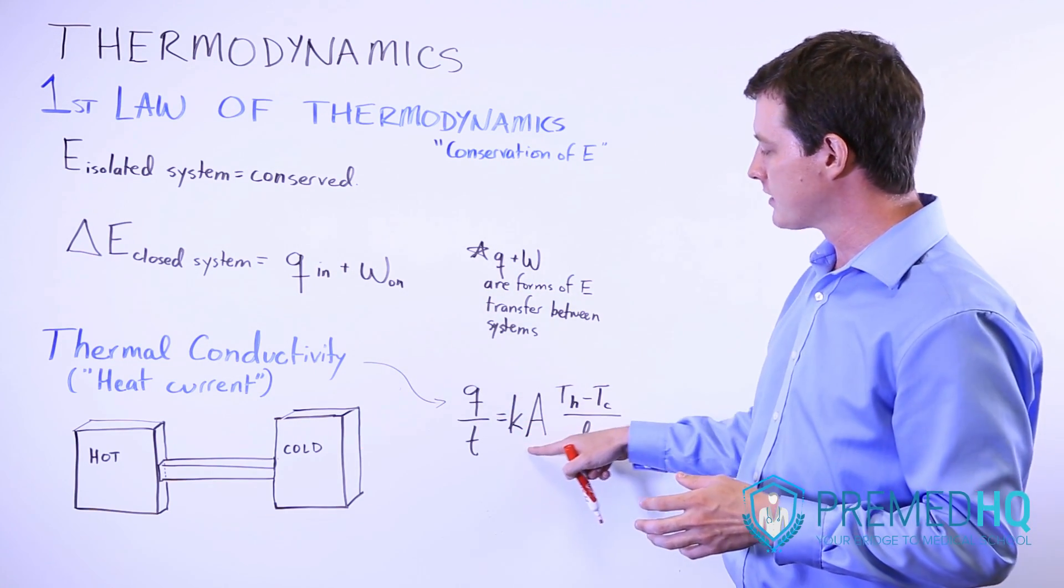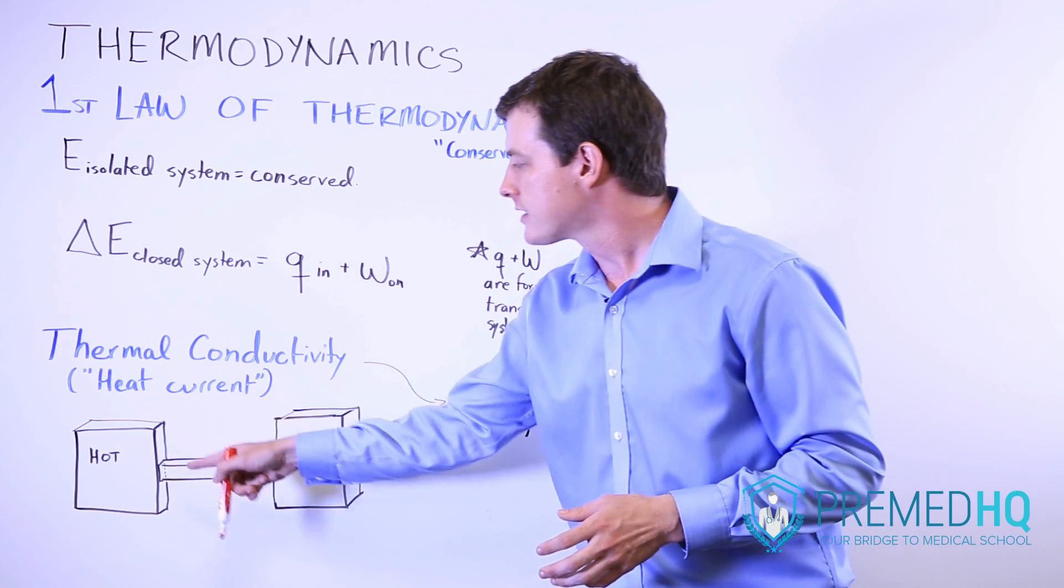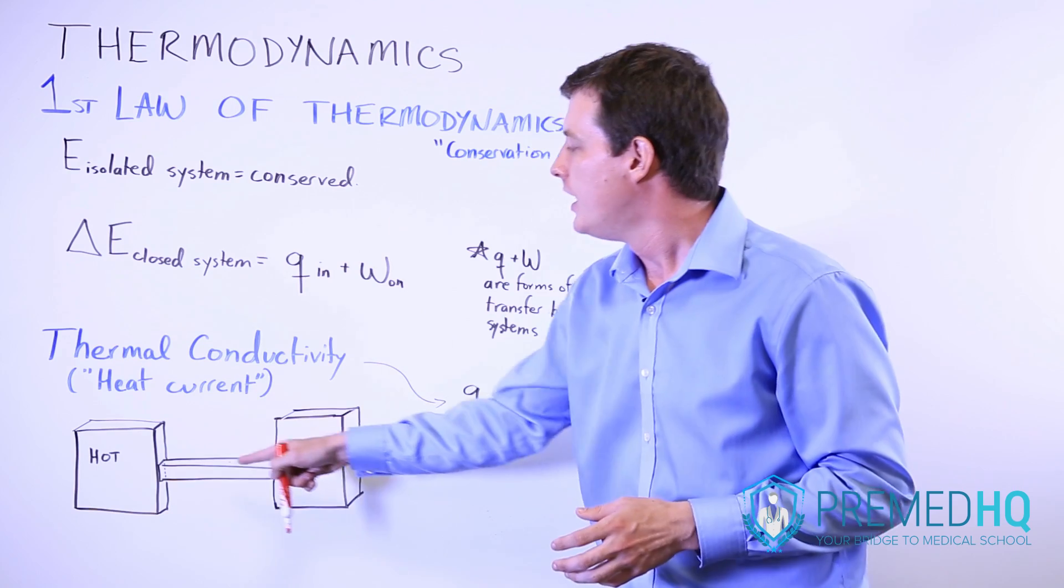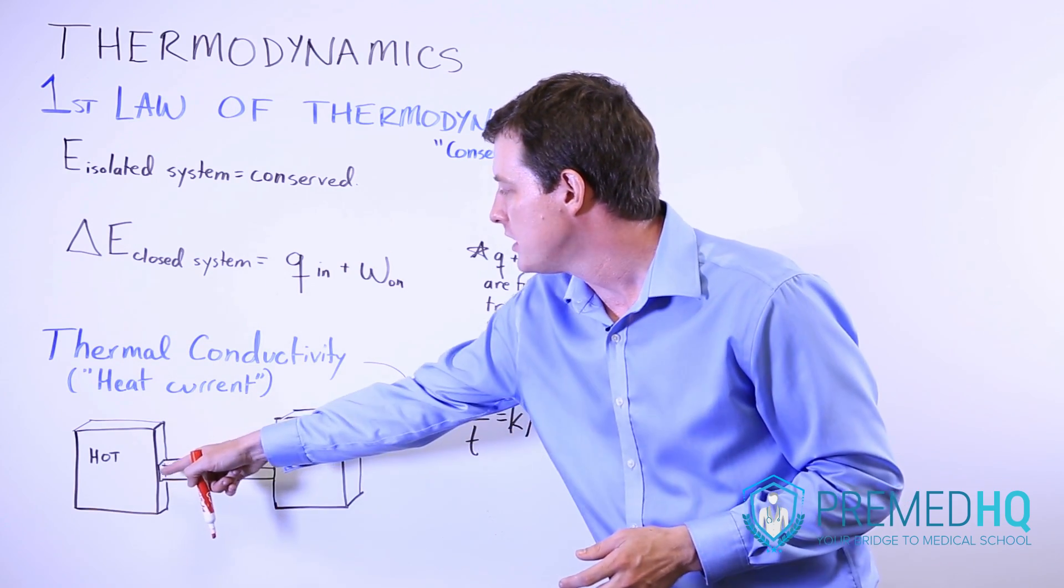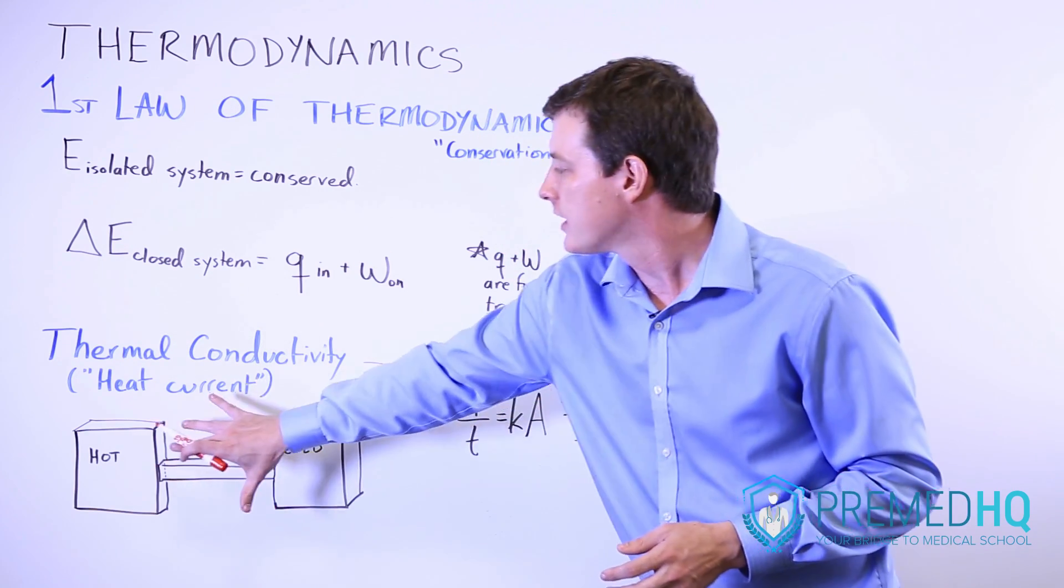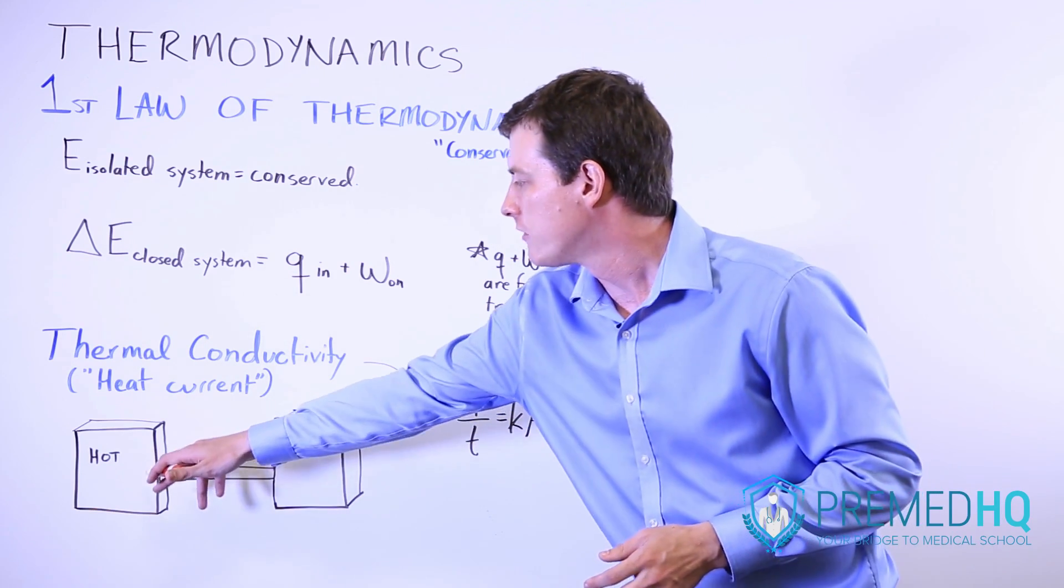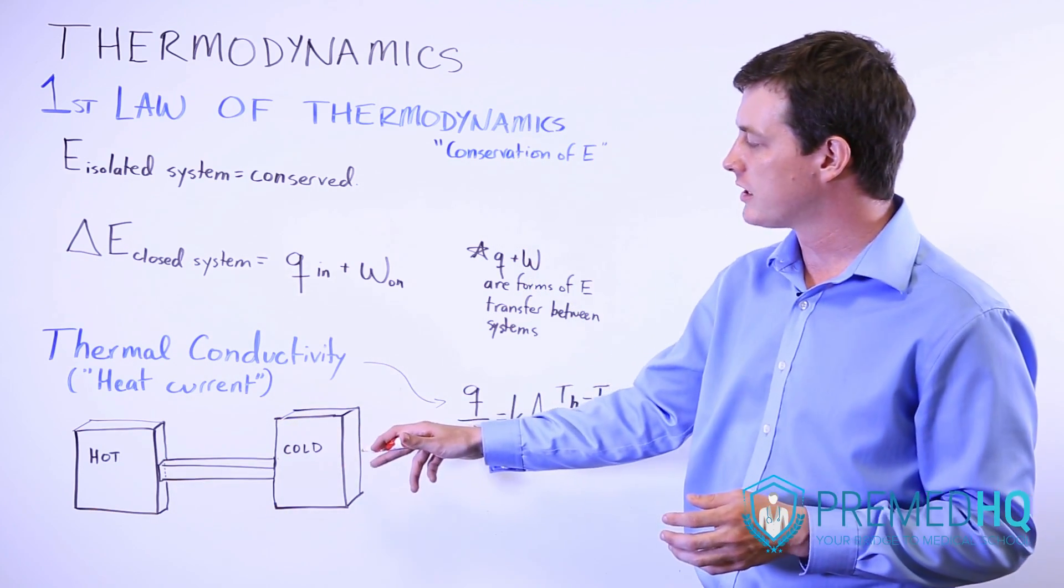Then you have the surface area that's considered. And so in this system, what we have is a hot reservoir and a cold reservoir. And the heat can only be transferred through here. Everything else is perfectly insulated. So this is what allows for the transfer of heat from this source over to there.